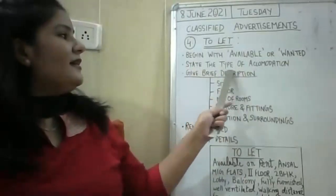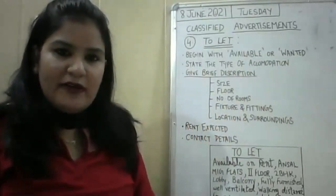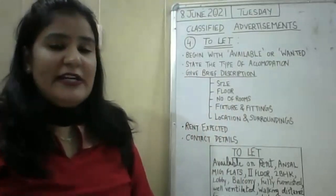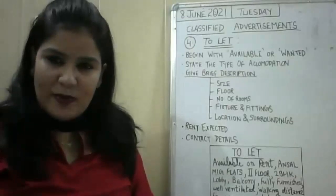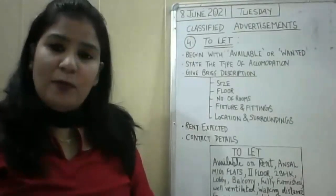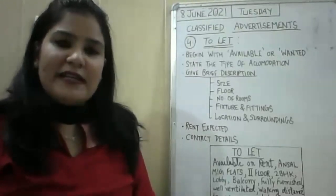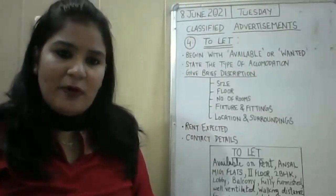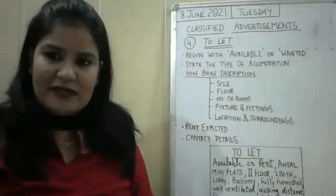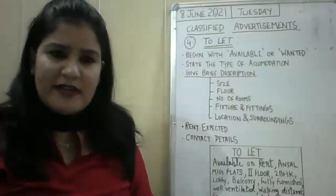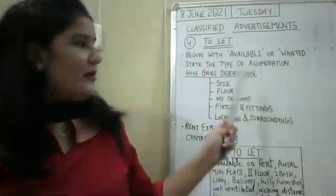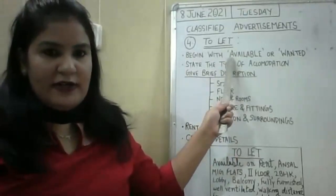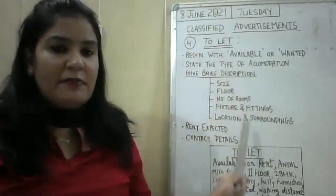Second value point: state the type of accommodation. You need to mention what sort of accommodation it is — whether it is a flat, an independent house, or a portion of your house such as the upper portion, first floor, or second floor of your building which is vacant. If it is a business, you can mention a shop, commercial property, or factory. You need to mention the type of accommodation, then give a brief description of that property.